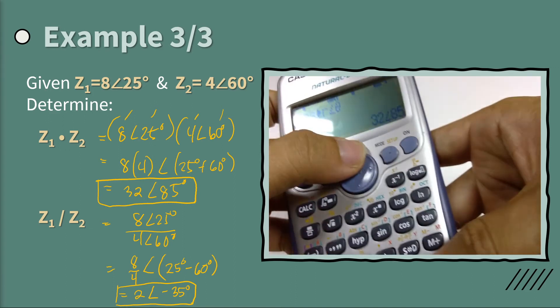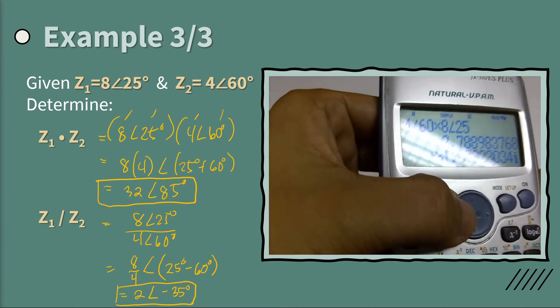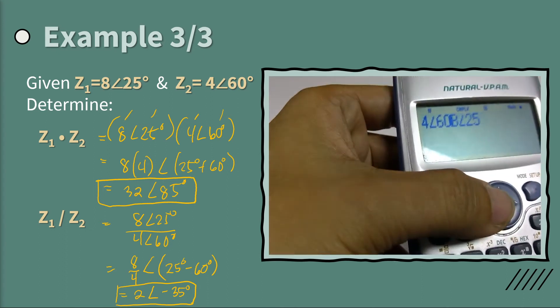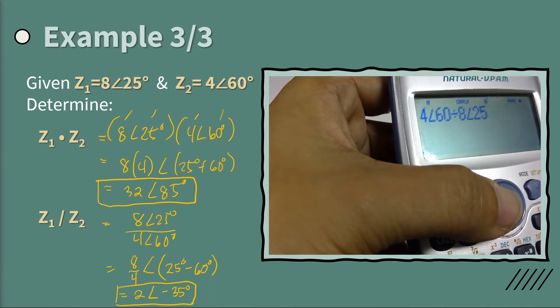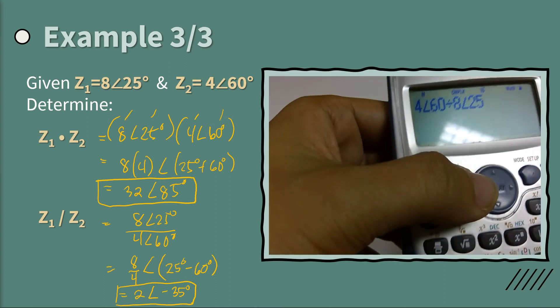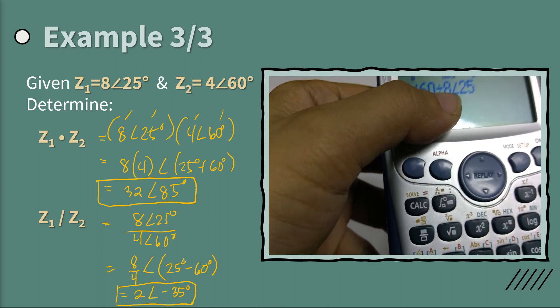So you have here 32 angle 85, which is the same as what we manually solved. And for the division, going back from the original equation, you just change the product with division. This actual division here. But you can also use the division sign.